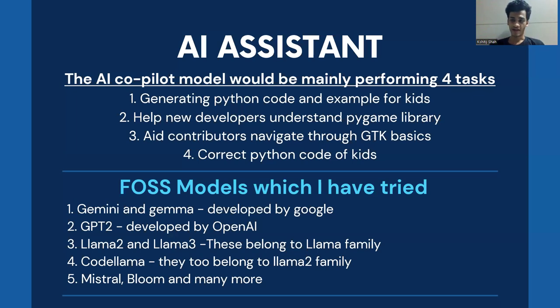Now talking about the AI assistant, it would be mainly performing four tasks. First would be generating Python code for kids along with examples. Second, it would be helping new developers understand pygame library and help them with the GTK basics. Last but not least, it would also be performing the task of correcting codes of the kids.